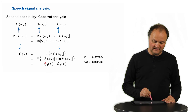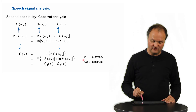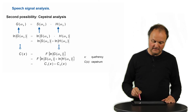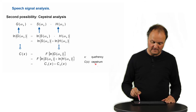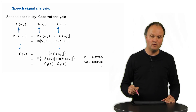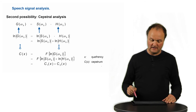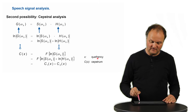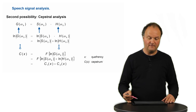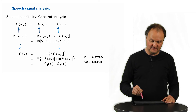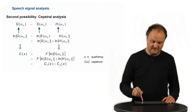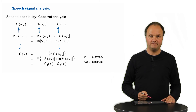one corresponding only to the excitation signal and another one corresponding only to the vocal tract. We call this the cepstrum. You can see that there is a change of the letters in the word spectrum which leads to cepstrum, just as the quefrency has a change of the letters of the word frequency. We should be aware that this has the unit of time.